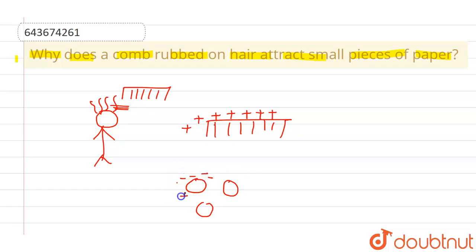get some charges. But electrically it is neutral, because it acquires equal amount of negative and equal amount of positive charges. But this negative charge and positive charge attracts these small papers towards the comb.